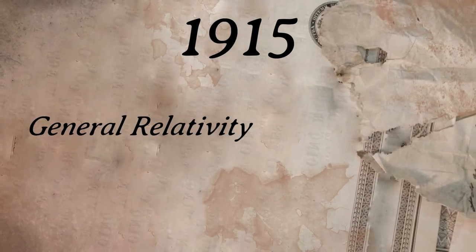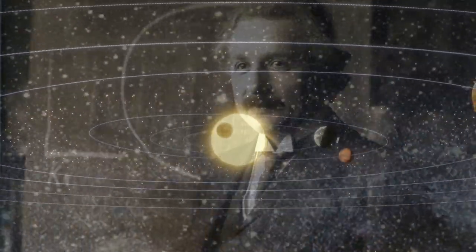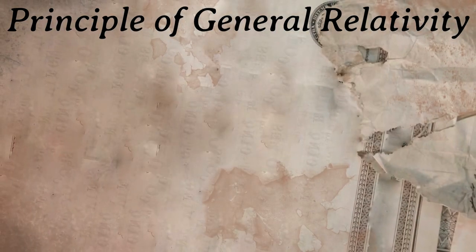In 1915, Einstein developed general relativity, which extends special relativity to include gravity. This general theory of relativity is what gave Einstein fame. The key principles of general relativity include the following.